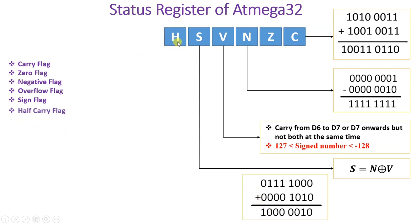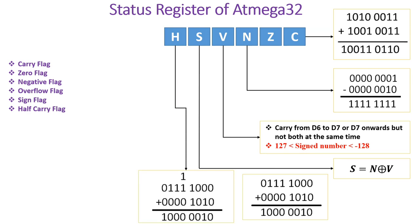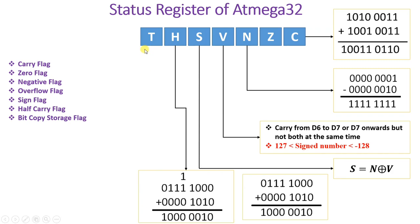Next is the H flag, the Half Carry flag, indicating nibble-to-nibble carry. This is the carry generated from the 4th bit. For example, in adding two data values, the lower 4 bits form one nibble and the upper 4 bits form the second nibble. When carry is generated from the lower nibble to the upper nibble, the Half Carry flag will get set to 1.